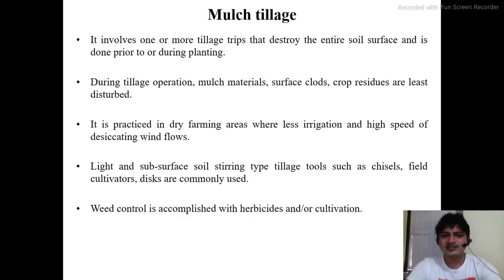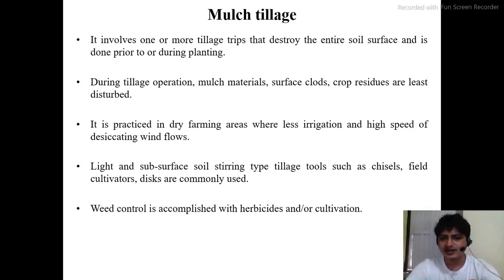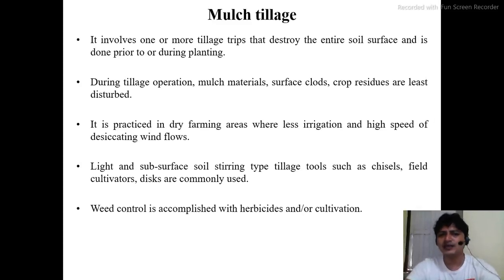Mulch tillage is a type of conservation tillage practice where all crop residues must remain on the surface as mulch material, rather than completely cleaning the field. This reduces the impact of soil erosion, increases infiltration, and provides other benefits to the soil. It is very similar to minimum tillage, with the key difference being that in mulch tillage there is a substantially greater amount of crop residues retained on the surface.